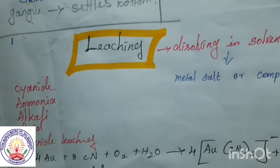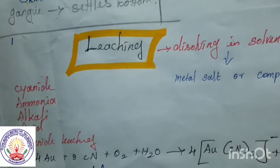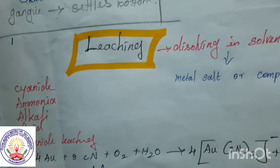That is, we are removing the impurities from the ore, separating it, purifying it, and getting the pure ore. In the concentration of the ore, we have seen two methods yesterday.